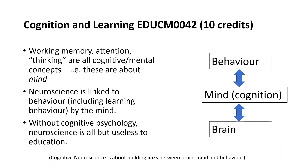In cognition and learning, you're going to be understanding a lot more about mind. Mind is very important because we're very interested in how the brain — what we understand about the brain — provides insight into learning behaviour. But to really make those links, we need to understand about cognition, about the mind. Concepts such as working memory, attention, even thinking — these are actually cognitive mental concepts about the mind. And this is the important filling in the sandwich between brain and behaviour.